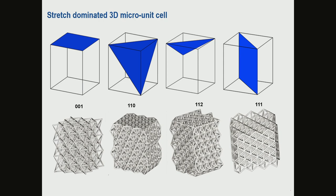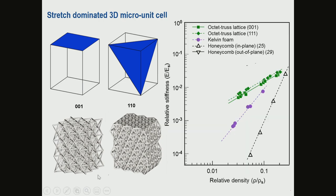You can pack unit cells in different orientations to design this type of metal material — just like designing a crystalline structure with different orientations and different faces. Testing mechanical properties in different orientations reveals they are also fairly isotropic. No matter how you load it, there is always a very favorable scaling between relative density and stiffness, far better than honeycomb or any other bending-dominated foams.